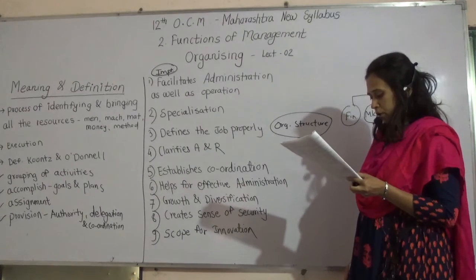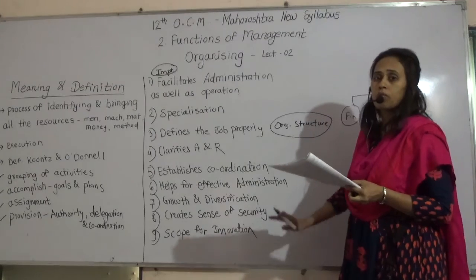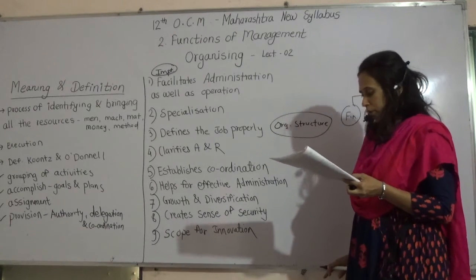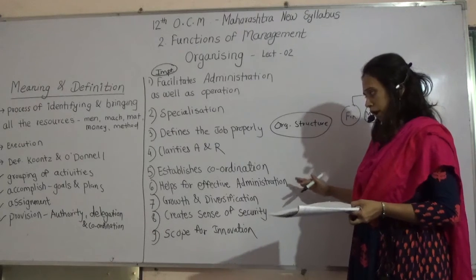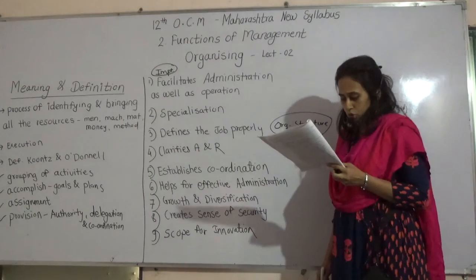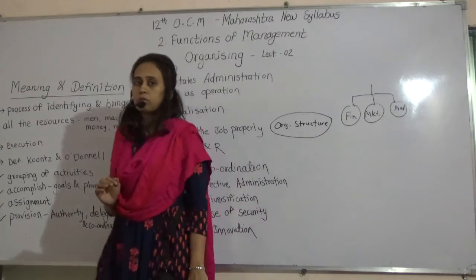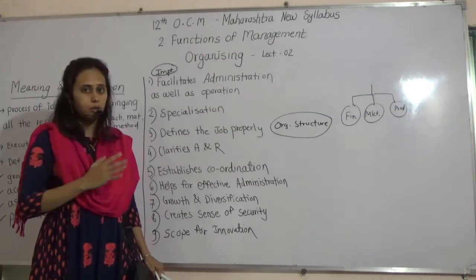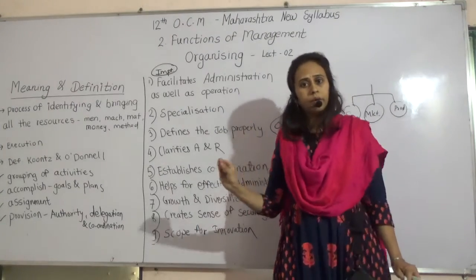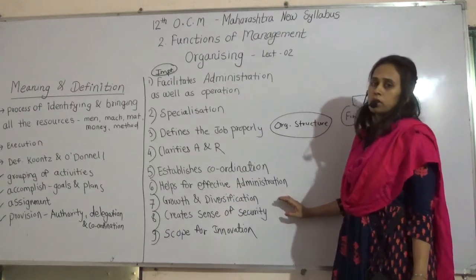Next, organizing helps for effective administration. The framework of organizing defines the role of each and every person. It defines the right job for the right person, which makes administration easy — meaning the work is carried on smoothly and effectively. Next, it helps with growth and diversification. Growth is possible only if the organization is working smoothly without any conflict, and this is possible when you fix the duties, authority, and responsibility of each manager. Then only the growth of the organization is possible.